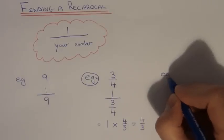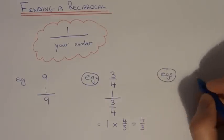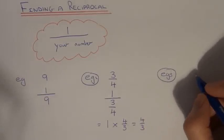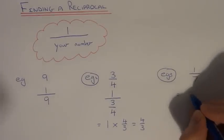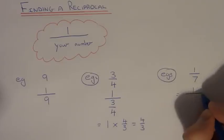Let's do one last example. So work out the reciprocal of 1 seventh. So again all we need to do is do 1 divided by our number which is 1 seventh.